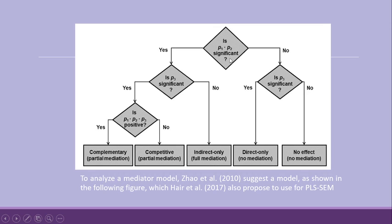Continuing the flowchart: if P1 and P2 are significant, but P3 (the direct effect) is not significant, then we say it is full mediation. If P1 and P2 are not significant but P3 is significant, it means there is only a direct effect — no mediation is present.